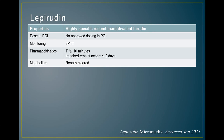Lepirudin is not approved in PCI or ACS patients. It has a short half-life and is renally cleared. It was removed from formulary at this institution due to the risk of conformational antibodies forming against it and because it is difficult to use clinically.